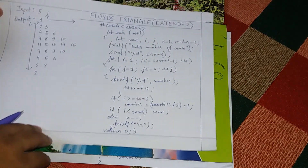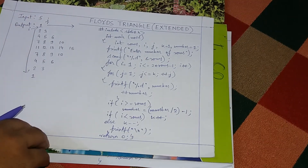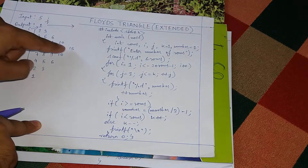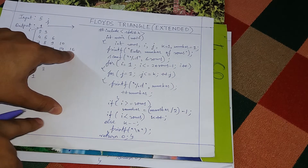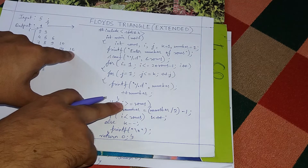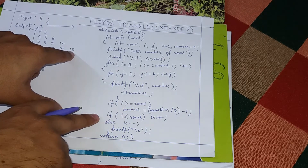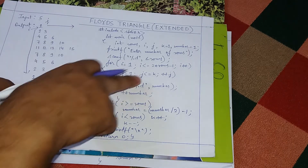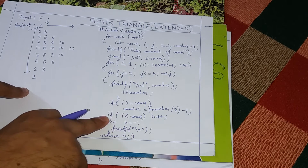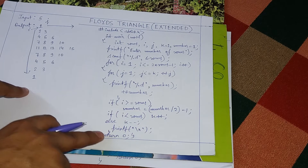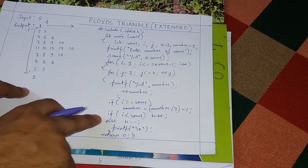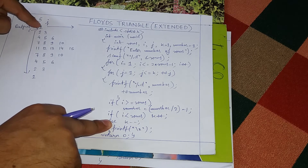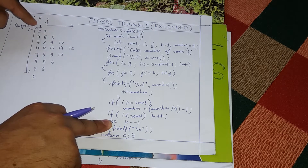Let us now discuss what we have done. After the j-loop, number must increment until fifteen and then reset. We wrote: if i is greater than or equal to rows, number equals number divided by two minus one. For k: if i is less than rows, do k plus plus; else do k minus minus. So for i equal to one, k becomes two, and this continues increasing until the mirror line.